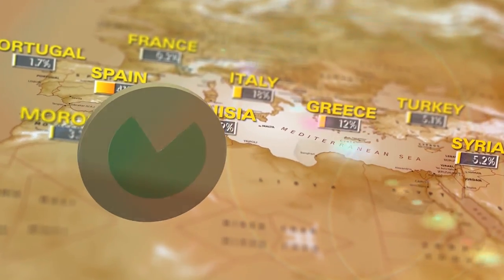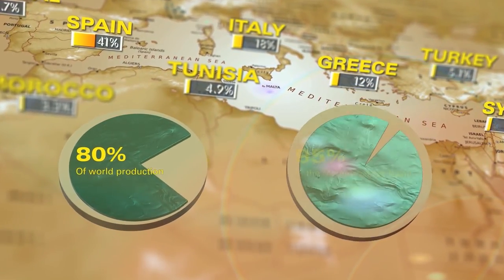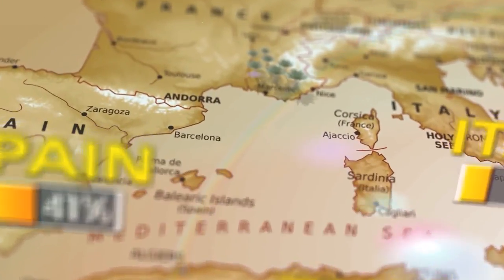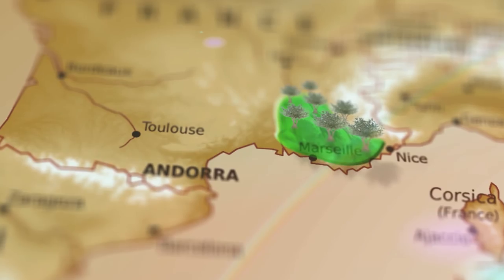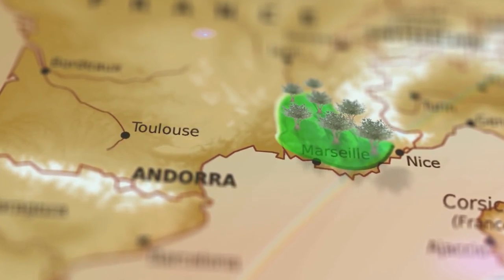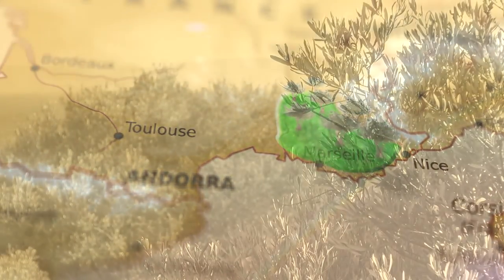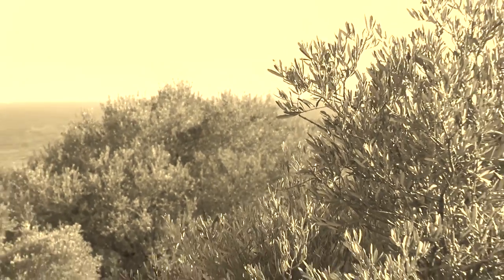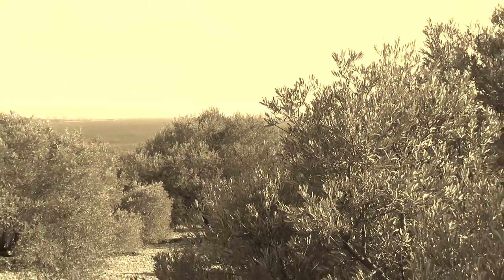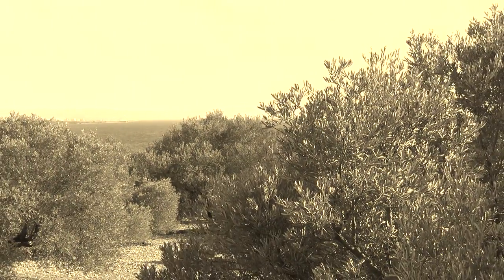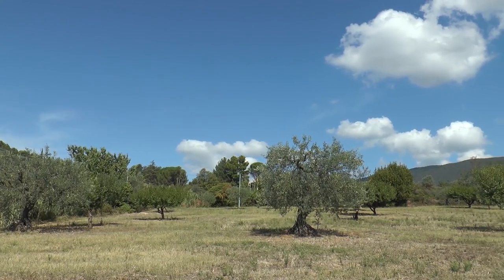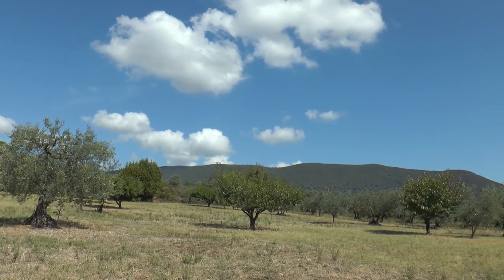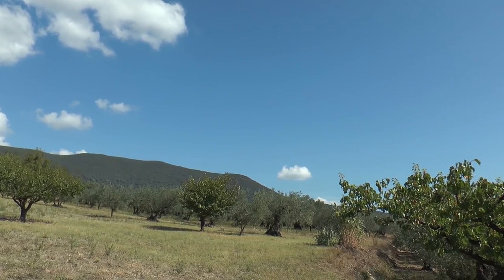These four countries account for 80% of world production, and 95% of production is in the Mediterranean basin. The French olive orchard extends over the Mediterranean coast between Nice and Marseille. The olive tree has been present in France since the Pliocene, and the first traces of domestication date back to the Neolithic period. Olive needs heat and a little humidity, and Provence has a favorable climate, but it is at the limit of global production.